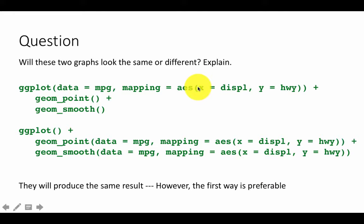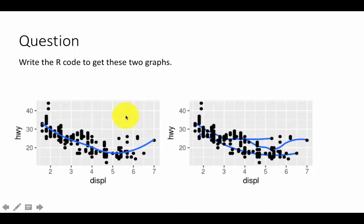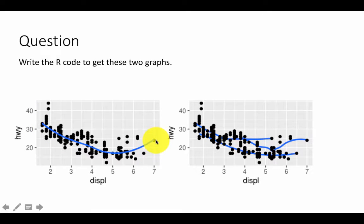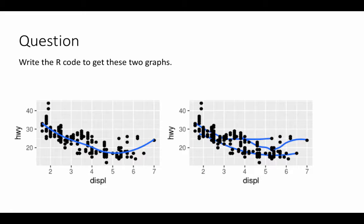Clearly in this example the first way is preferable — the second is so verbose there's no point repeating everything. Now write the R code to generate these two graphs. First, note the points are thicker than the standard scatter plot. In one graph you have one smooth line without confidence intervals; in the other you have multiple smooth lines. Based on prior experience, the multiple lines appear to be driven by drive since there are three of them. Pause the video and try it out.